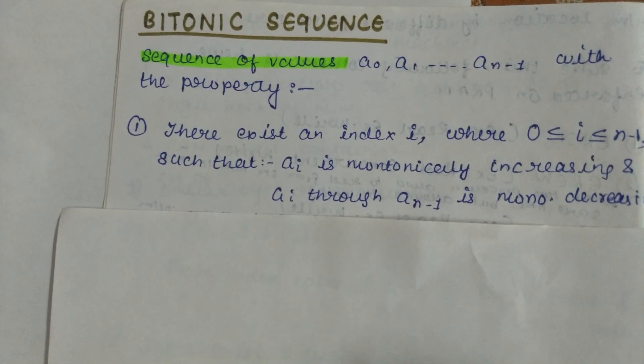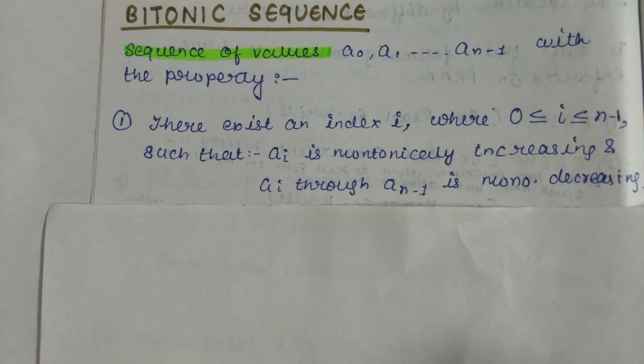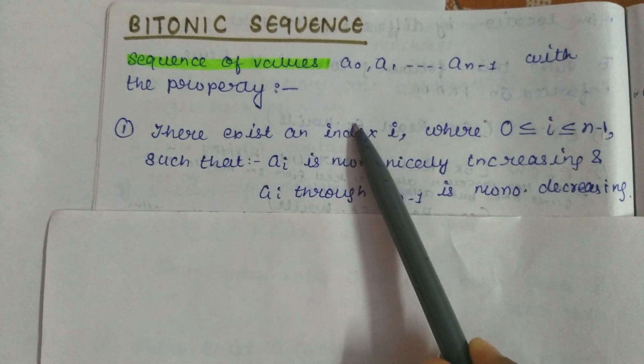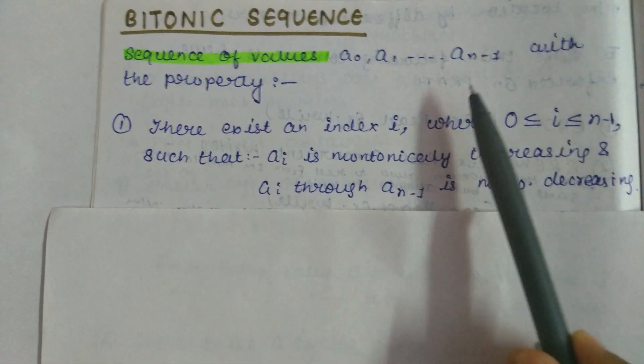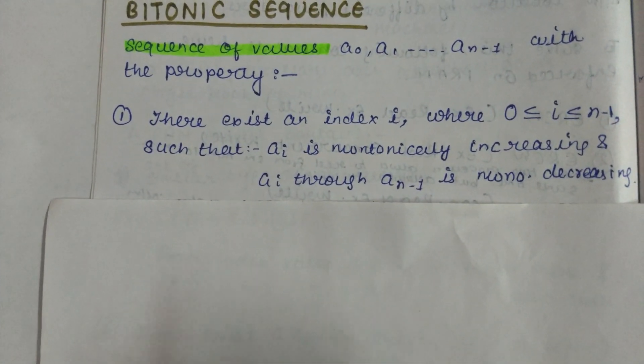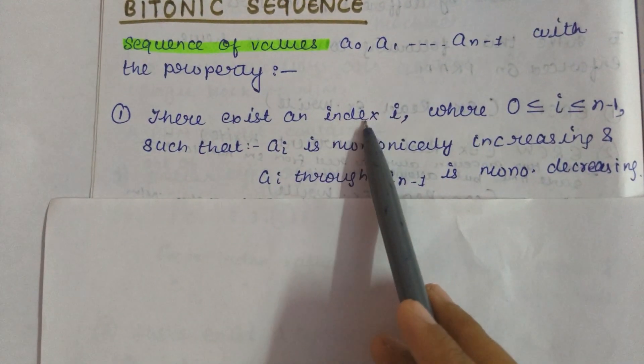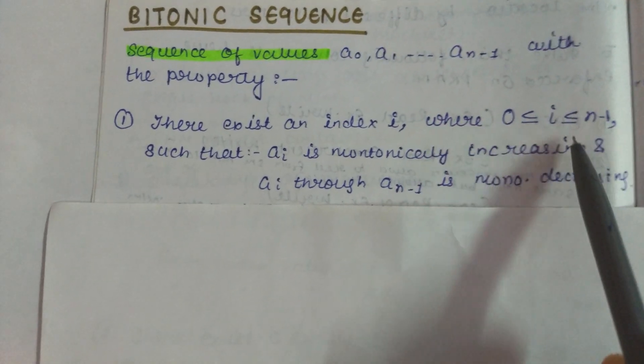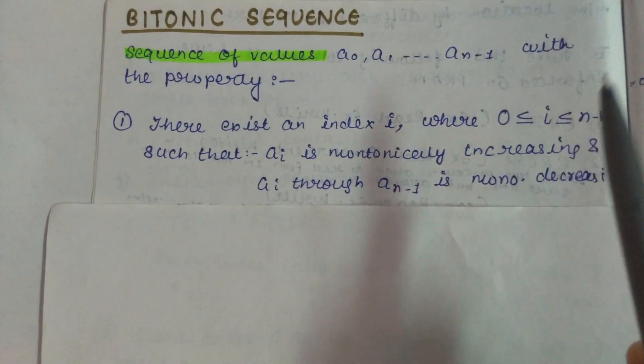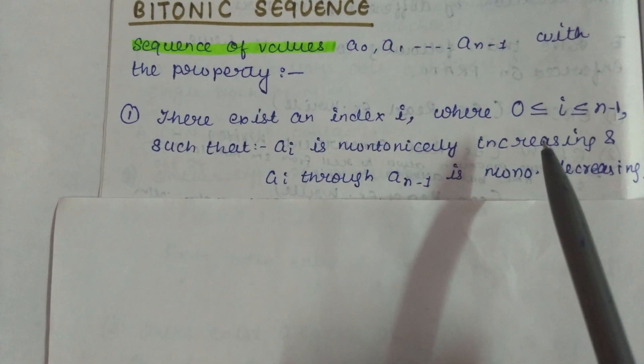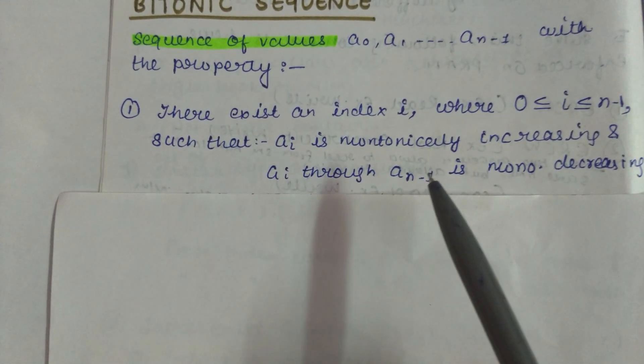What is a bitonic sequence? It is basically a sequence of values from a0 to an-1 consisting of two properties. The first one is: there exists an index i where 0 ≤ i ≤ n-1, such that ai is monotonically increasing and ai through an-1 is monotonically decreasing.